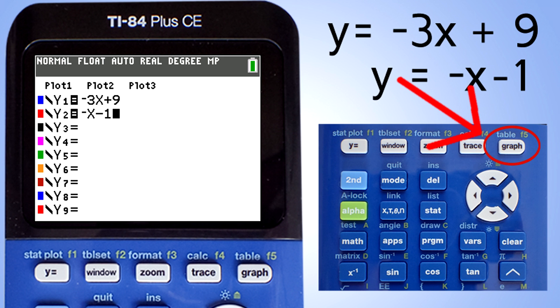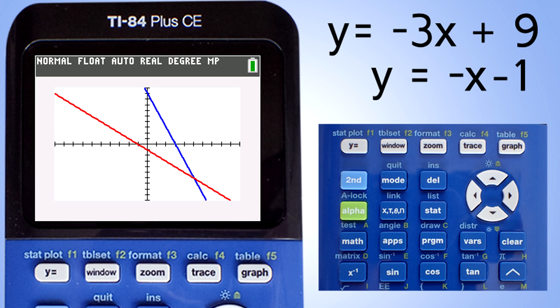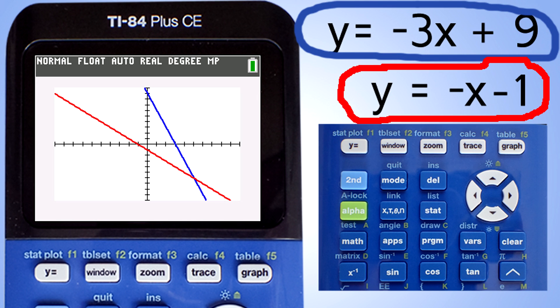Press this graph button here. This is the graph of the two equations: the negative 3x plus 9 in blue and the negative x minus 1 in red.